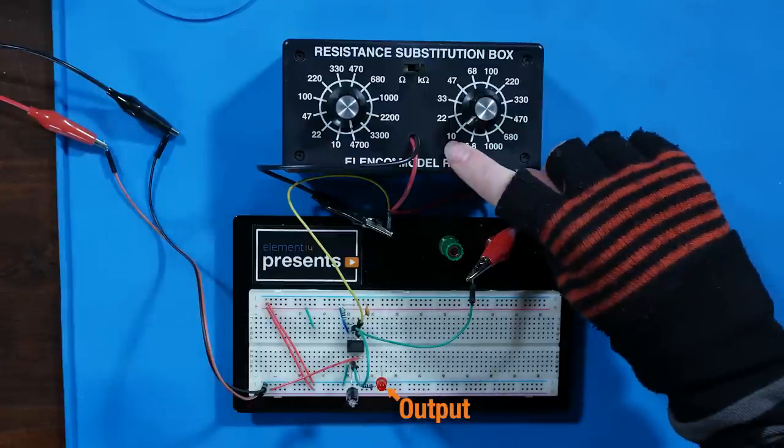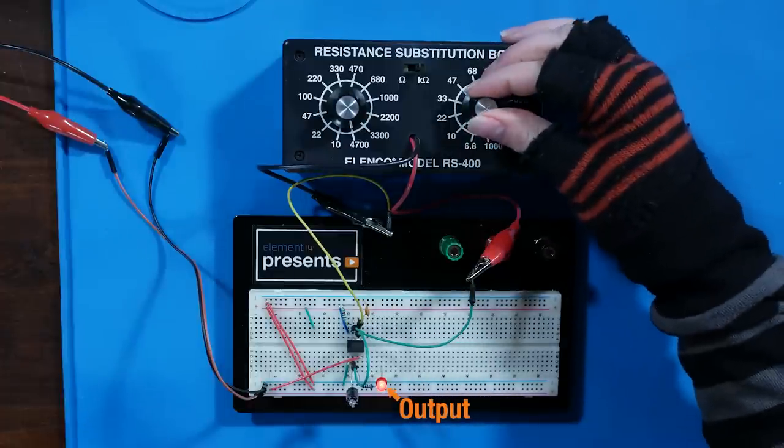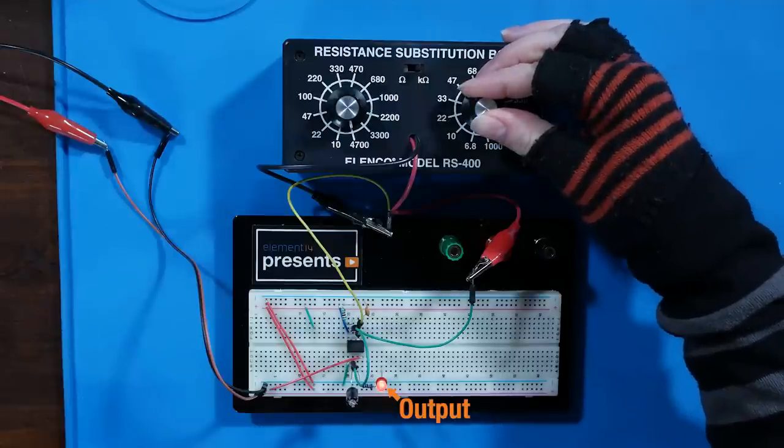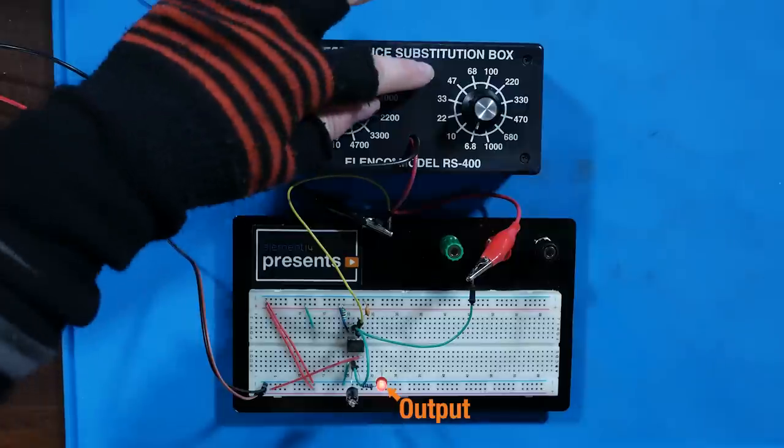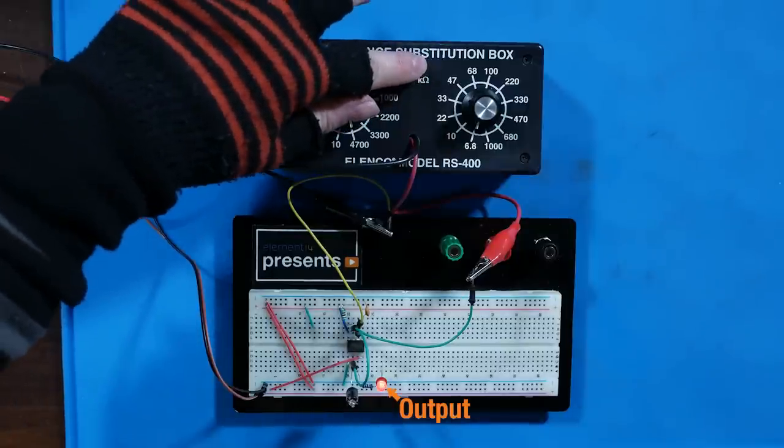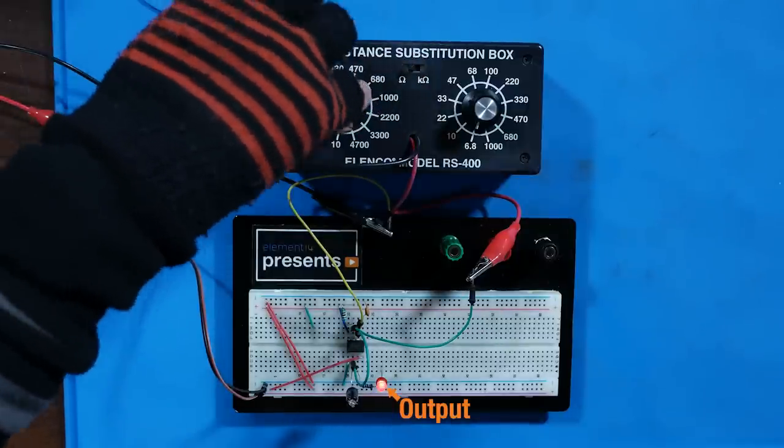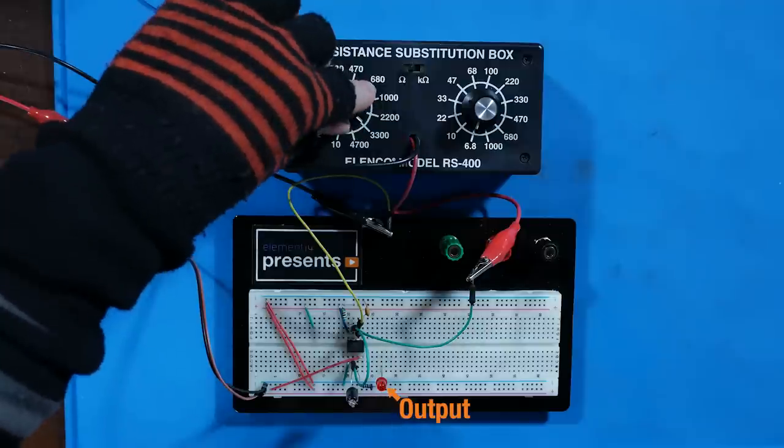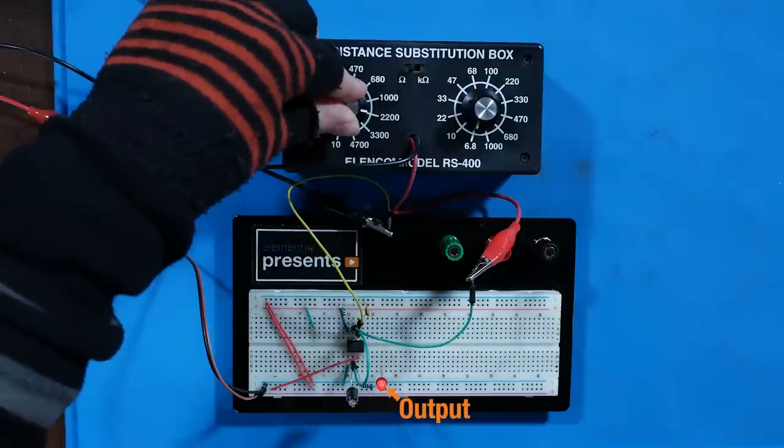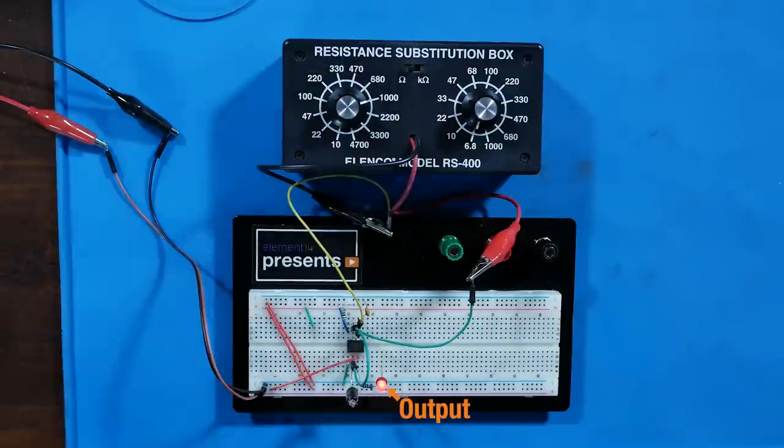By reducing the value of this resistor, I can make the speed go faster. 6.8k ohms, 4.7k ohms, 3.3k ohms, 2.2k ohms, or 1k ohm.